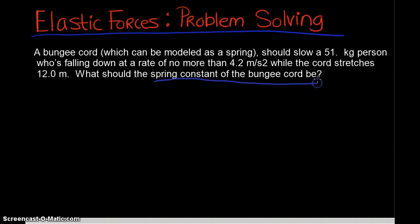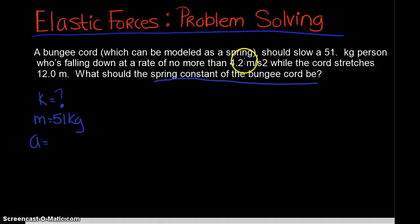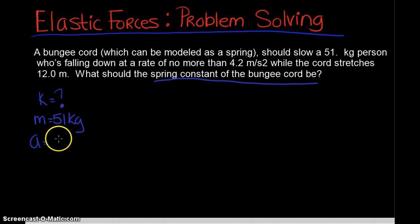For this problem we are looking for the spring constant, that's our unknown. We know the mass of the person is 51 kilograms, and it says that the person is falling down at a rate of no more than 4.2 meters per second squared. So I know that this is an acceleration. I'm uncertain about the sign at this point - once we assign some directions and put a sketch on this, we can assign whether this acceleration is positive 4.2 or negative 4.2.